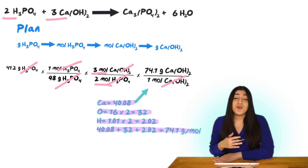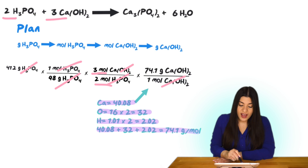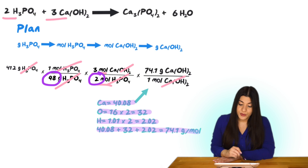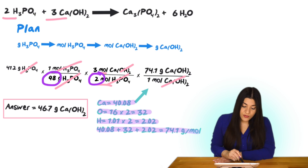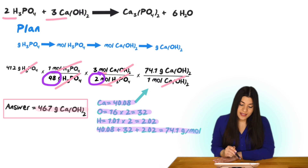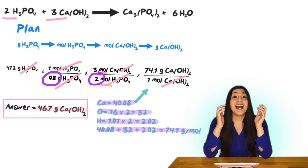Multiply straight across and divide by 98 times 2, and we get our final answer of 46.7 grams of calcium hydroxide.